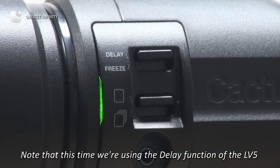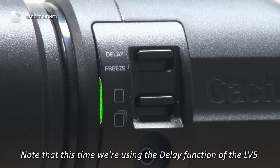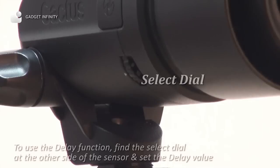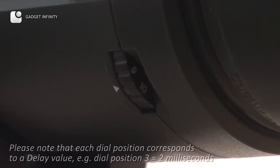Note that this time we're using the delay function of the LV-5. To use the delay function, find the select dial at the other side of the sensor and set the delay value. Please note that each dial position corresponds to the delay value.